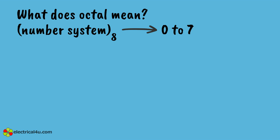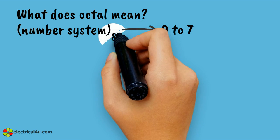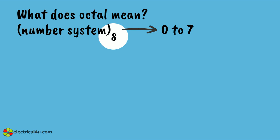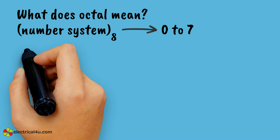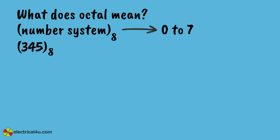In the early days of computing, the octal numbering system was very popular for counting inputs and outputs. As the octal number system has a radix of 8, to represent a number in this system the suffix or subscript 8 is used to identify it — such as 345 subscript 8.